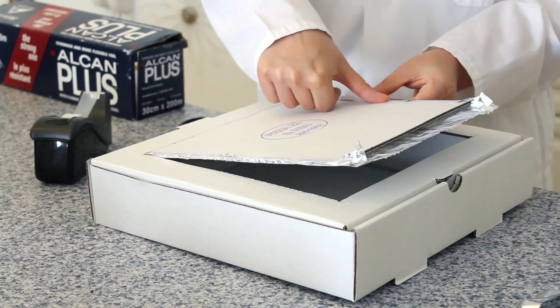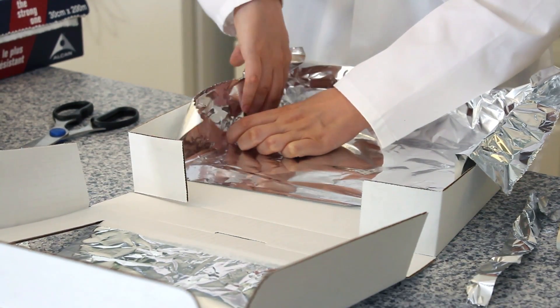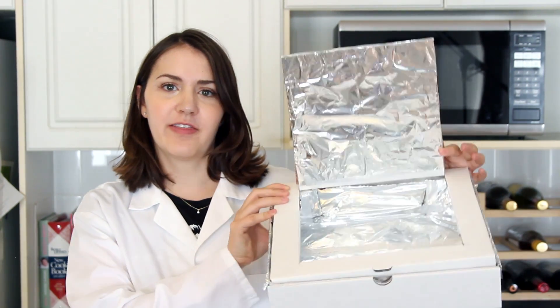Next, we're going to line the interior of the box with aluminum foil. You want to make sure that the shiny side is facing into the box. Once you're finished, the inside should look like this.